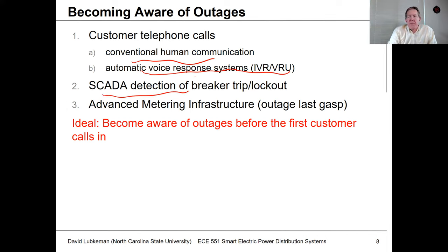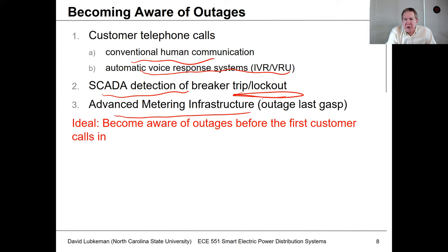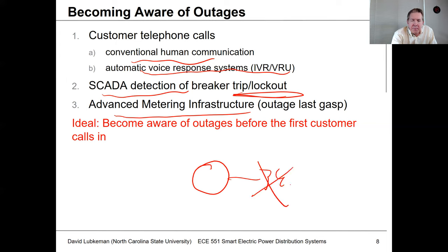You'll also have data through your SCADA when a breaker operates, because the relay sends an event message to SCADA saying something happened and the circuit breaker opened. You're mostly interested in knowing whether you get a lockout. Nowadays a lot of this is driven through advanced metering infrastructure — what we call the outage last gasp. When a meter loses power, it has stored energy in a capacitor, enough to send one last message saying it's lost power. Most residential meters don't have batteries, so they rely on that stored capacitor energy.